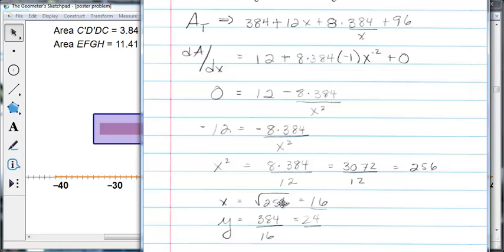So x is the square root of 256, only the positive, normally we'd say plus or minus, but it doesn't make sense to have a dimension of a poster in negative land. So we end up with 16 inches is either the min or the max, depending.